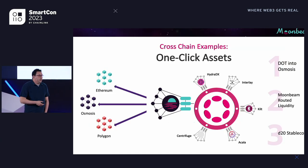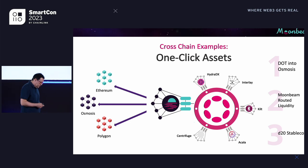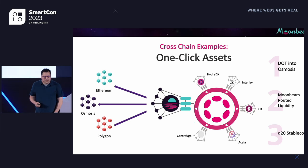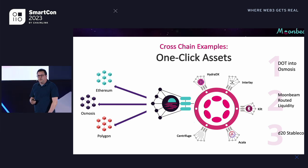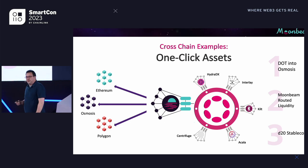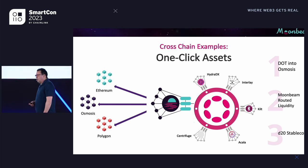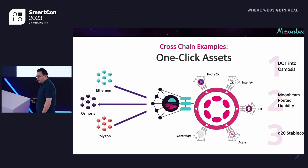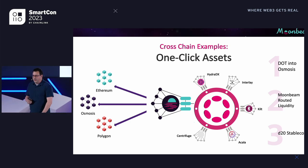I want to go through a few examples and pull out some themes I think are relevant. One category of use case — the low-hanging fruit you see right off the bat — is around what I call asset and automation. So asset automation, like one-click assets. I'll give a couple of examples from Moonbeam to help illustrate it, but this is happening in a lot of different environments.